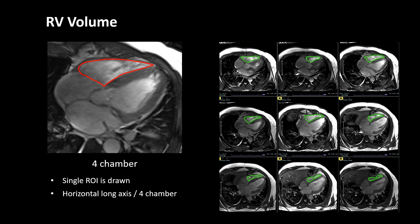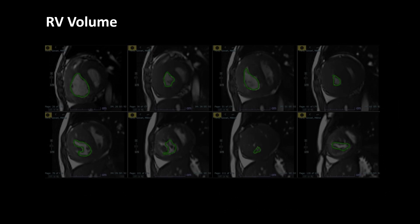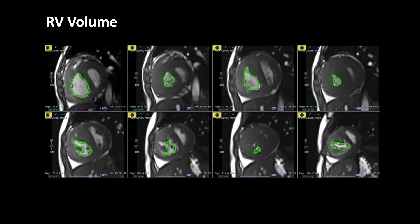For the right ventricle, we usually draw the ROI on the 4-chamber view. But sometimes when RV walls are thickened, it can also be drawn in short axis just like the LV, and if you draw the epicardial ROI, you can also get RV mass.